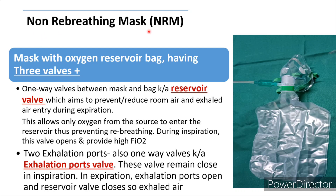The non-rebreathing mask (NRM) — the basic difference between the NRM and the partial re-breathing mask is that the NRM also contains three one-way valves. As seen in this image, there is the mask, the reservoir bag, and three valves. One is the reservoir valve, located between the reservoir bag and the mask. This one-way reservoir valve is closed during exhalation, so exhaled air and room air will not enter into the reservoir bag.